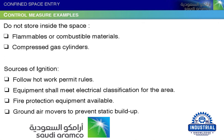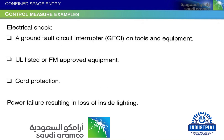Control measure examples: do not store inside the space flammables, combustible materials, or compressed gas cylinders. Eliminate sources of ignition. Follow hot work permit rules. Equipment shall meet the electrical classification for the area. Fire protection equipment must be available. Ground air movers to prevent static buildup. Use a ground fault circuit interrupter (GFCI) on all tools and equipment. Use only listed or FM-approved equipment. Ensure coat protection and backup lighting for power failure.